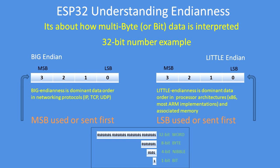Big Endian is usually used for network transfers, and Little Endian is almost exclusively used for processors and sensors.